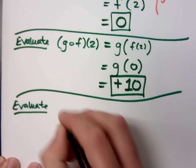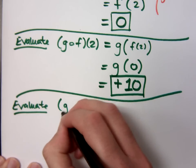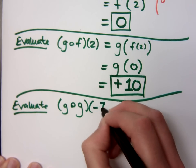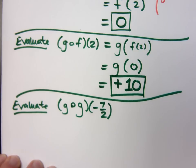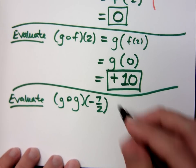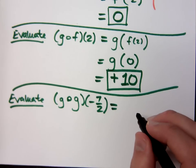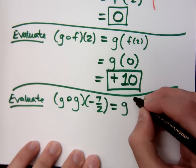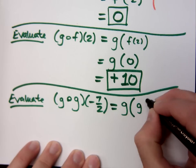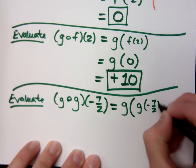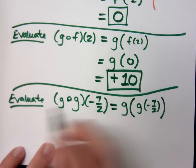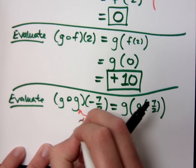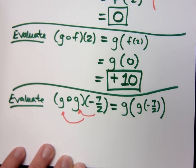If I ask you to evaluate g of g of negative 7 halves, what does that mean to us? Using the g equation twice with negative 7 halves for the first one, and the answer from the first end of the second. Right, so I plug negative 7 halves into g, and I take that result, and I go into, in this case, g again.